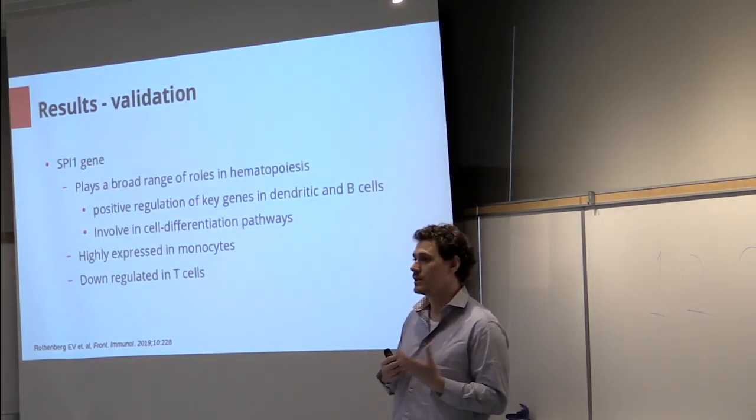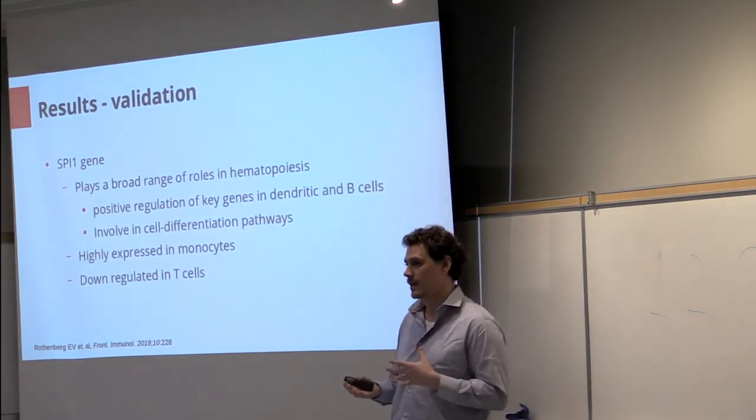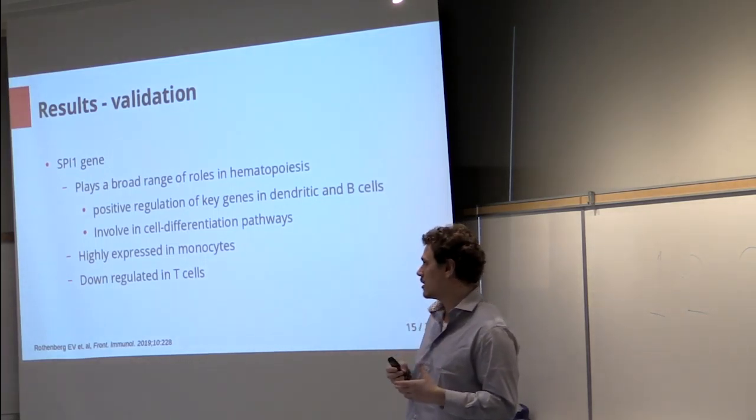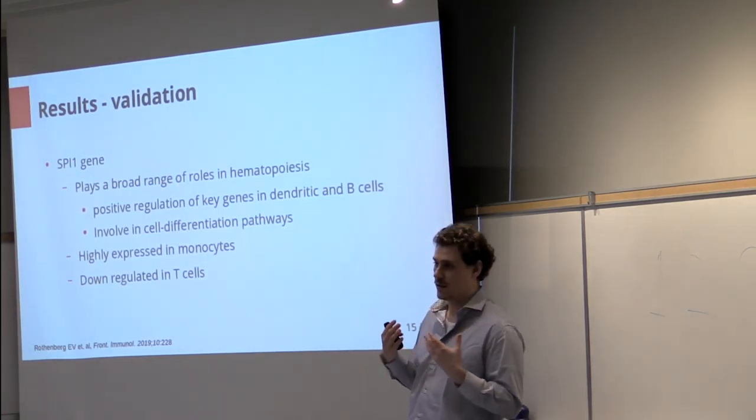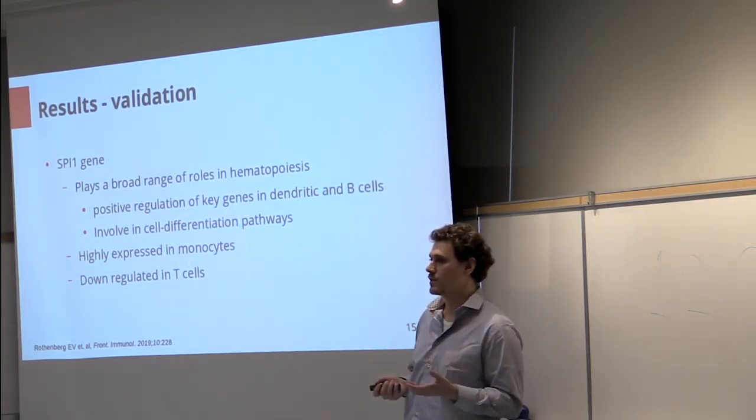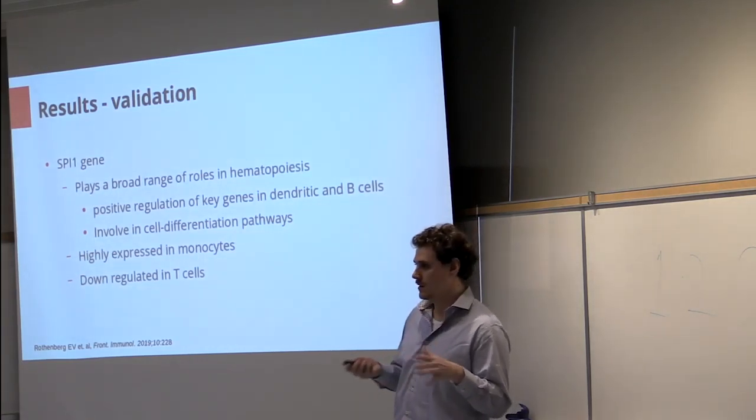So we found the SPI1 gene that plays a broad range of roles in hematopoiesis. It is a master regulator of dendritic cells and B cells and it's also involved in the differentiation pathways. We expect to find this gene highly expressed in monocyte cells and lowly expressed in T cells.